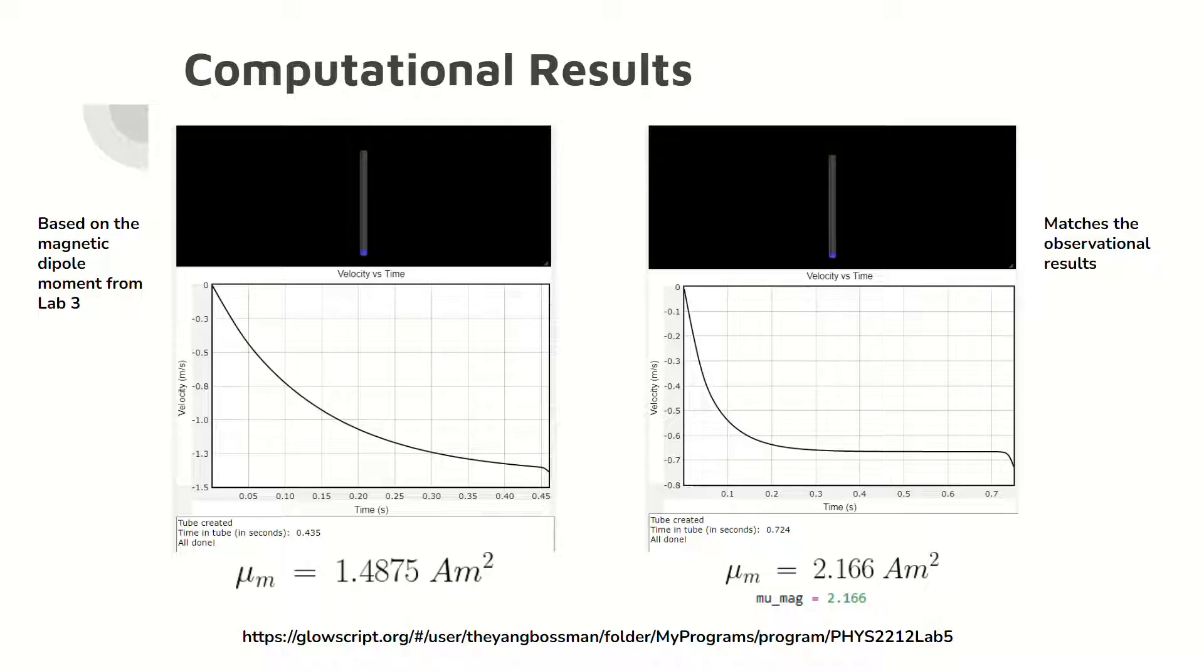Here are the results from the computational model. The result based on the magnetic dipole moment from lab 3 is shown on the left. On the right, the result is based on the magnetic dipole moment of 2.166 amperes meters squared.